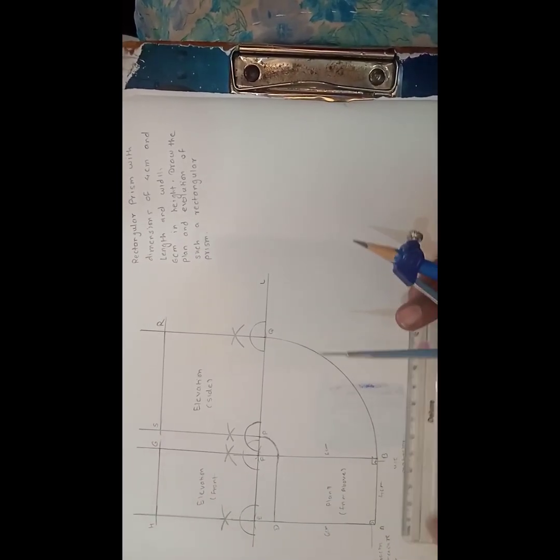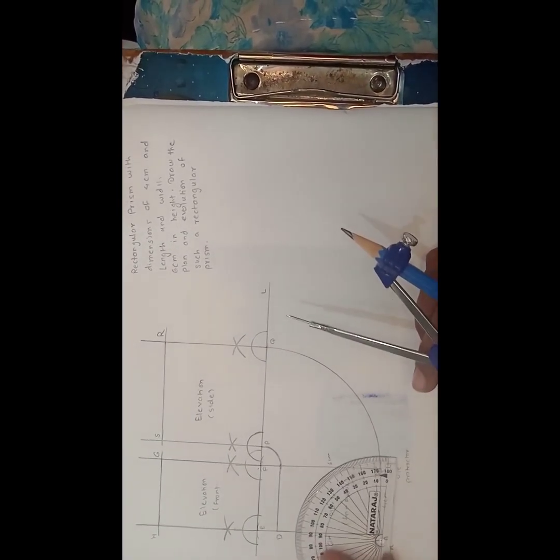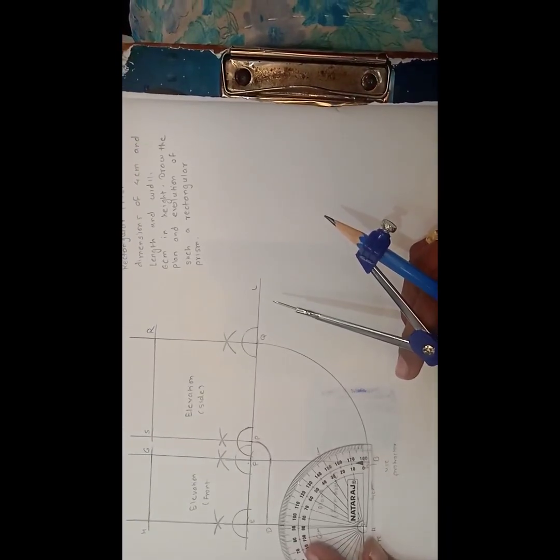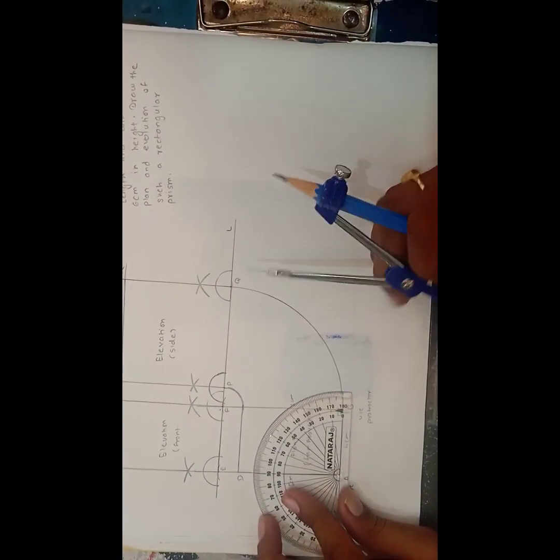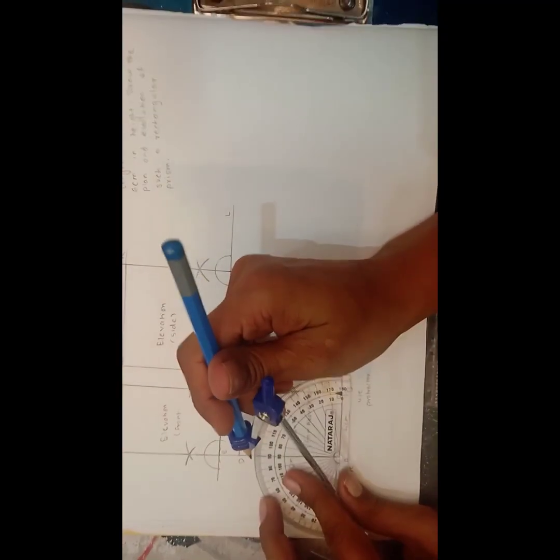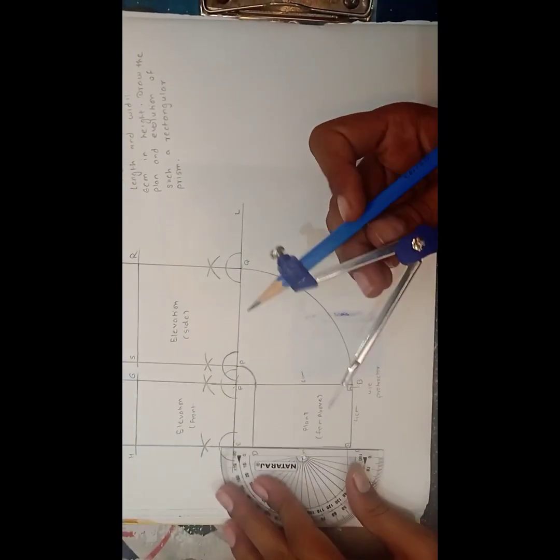Then by using the protractor find out the 90 degree over here. Put a dot and draw a line which is passing through it.